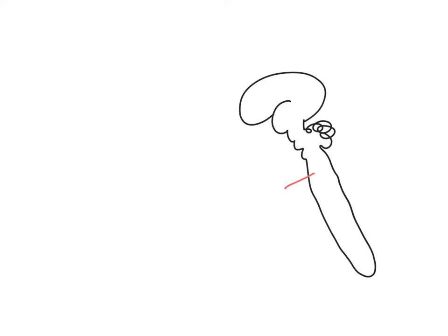Spinal nerves are those nerves which emerge from the spinal cord and which contain both sensory and motor as well as sometimes autonomic components. Here's an overview of the entire central nervous system and we can show here the spinal nerves emerging in pairs as red lines.